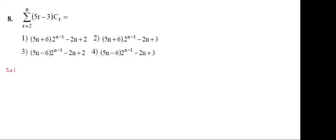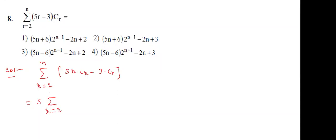General method: sigma from r = 2 to n of 5·r·Cr minus 3·Cr. Split: 5·sigma(r=2 to n) of r·Cr minus 3·sigma(r=2 to n) of Cr. Yesterday I discussed this formula.